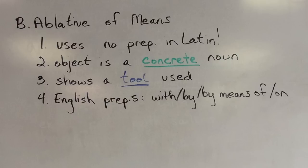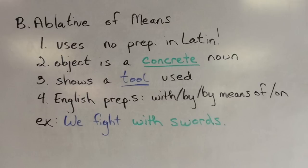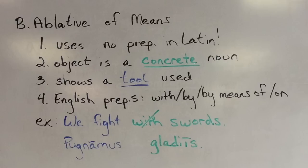For example, if we had the English sentence 'we fight with swords,' we would translate 'we fight' as pugnamus. The phrase 'with swords' is ablative of means because it's indicating a tool used rather than a companion — it's a concrete noun, not a person. So we would translate it simply as gladiis, with no Latin preposition, because the ablative of means does not use a preposition. That English word 'with' just goes into the air, much like how 'of' disappears with genitives or 'to' disappears with datives.